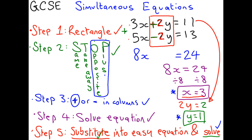You've done all the steps and your answers are x equals 3 and y equals 1. If you don't believe me, try putting 3 in for x and 1 in for y and you'll get the answer. 3 times 3 is 9, plus 2 times 1 gives you 11. Same for this one: 5 times 3 is 15, take away 2 times 1 is 2, giving 13. So this method works.